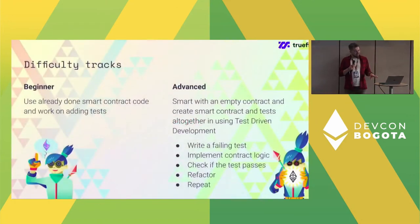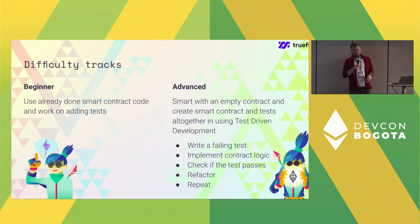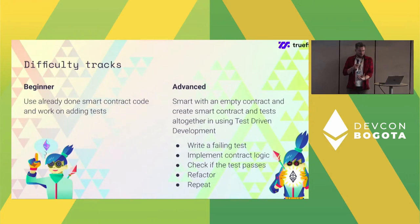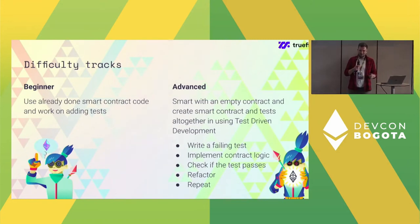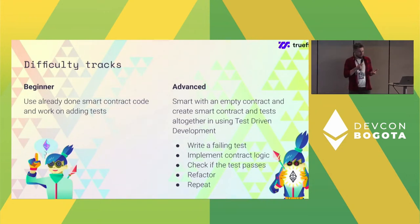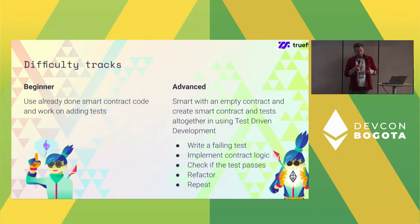Now it's time to dive in. There are two difficulty tracks: a beginner track using already-done smart contract code from the downloaded repository, or an advanced track where you start with an empty smart contract and test-drive your code. Test-driven development means you first write the test, see it fail — confirming the contract doesn't yet have that property or function — then implement the smart contract logic, see the test pass, do any necessary refactoring, and repeat for the next property.